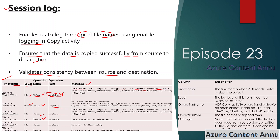Similarly, if a file is getting skipped, the log captures the reason it is being skipped. For example, it might say sample1.csv was changed by other clients during the copy activity run — this is the reason why it got skipped. On similar notes, it will capture details of all files being copied using the same copy activity.